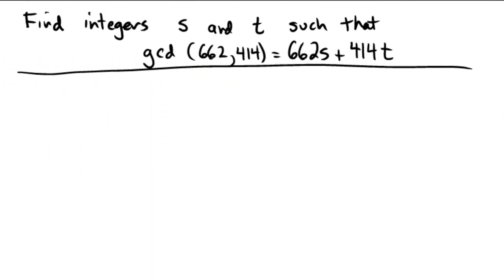Let's write the GCD of 662 and 414 as a linear combination of those numbers using the Euclidean algorithm. So I'm using the Euclidean algorithm in the background here.